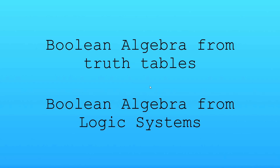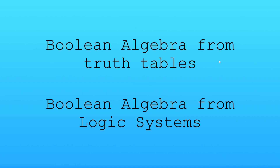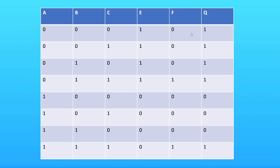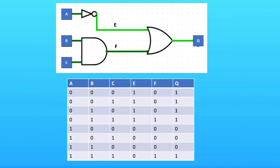So, deriving boolean algebra. In this video we'll be covering from truth tables as well as from logic systems. First we'll cover from truth tables — this is the truth table we created in the last video, where we created a truth table from a logic system. Over here we have that logic system again and the truth table. In this video we'll be working backwards: we'll have the table but not the circuit, and we'll create the algebra needed to build this circuit.